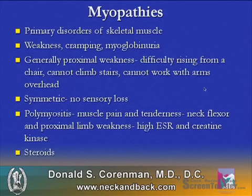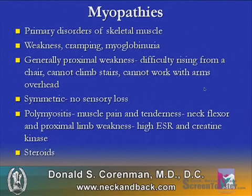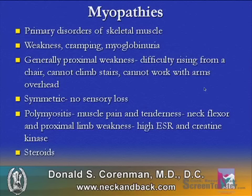Myopathies are not uncommon. It is primarily a disorder of skeletal muscle, with associated weakness, cramping, and myoglobinuria. Generally there is proximal weakness — difficulty rising from a chair, patients can't climb stairs due to quad and buttocks weakness, and they can't work with their arms overhead. It is typically symmetric and there is no sensory loss; this is purely a muscle disorder. Polymyositis presents with muscle pain and tenderness, neck flexor weakness, and proximal limb weakness. There is typically a high ESR and creatine kinase, and it is treated with steroids.